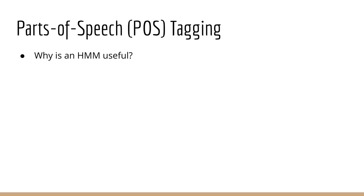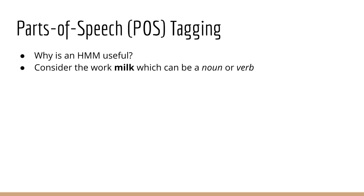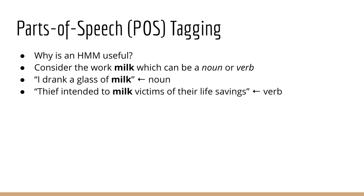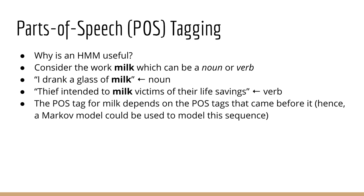To see why a Markov model might be useful here, consider words that have different meanings. Let's take the word 'milk.' Milk can be a noun or a verb depending on the context — you can't classify milk as a noun or verb without knowing the surrounding words. Consider the sentence 'I drank a glass of milk' — in this case, milk is a noun. Now consider 'thief intended to milk victims of their life savings' — in this case, milk is a verb. The classification of milk as a noun or verb depends on the parts of speech that came before it, and thus it makes sense for the hidden state sequence to be a Markov model.